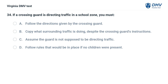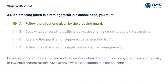If a crossing guard is directing traffic in a school zone, you must: A. Follow the directions given by the crossing guard, B. Copy what surrounding traffic is doing despite the crossing guard's instructions, C. Assume the guard is not supposed to be directing traffic, D. Follow rules that would be in place if no children were present. The correct answer is A: Follow the directions given by the crossing guard. Be prepared to reduce your speed and use caution when directed to do so by a sign, crossing guard, or law enforcement officer. Always drive with extra caution in a school zone.